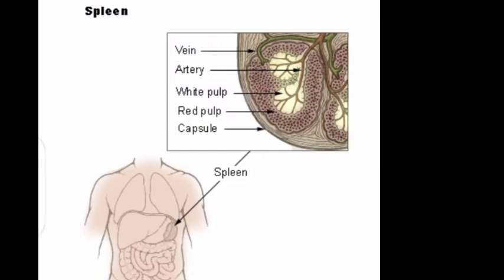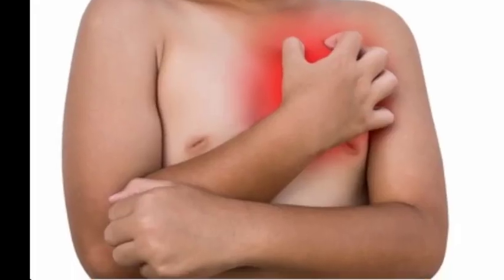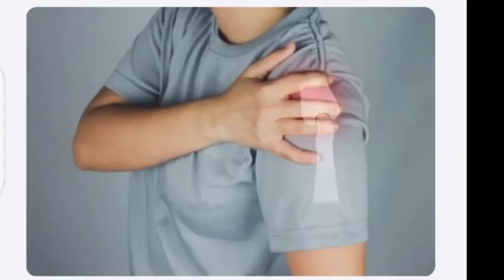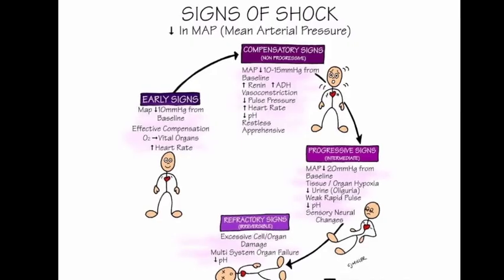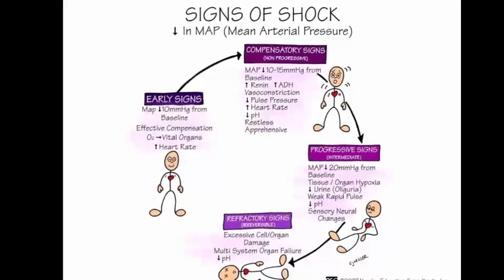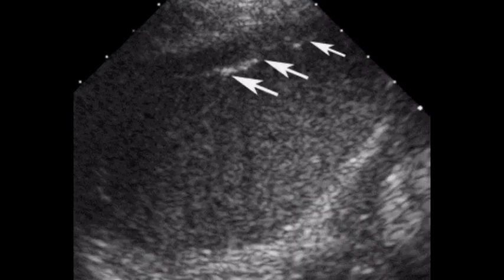Patients may present with left upper quadrant, left chest pain, left shoulder tip pain, and signs of hypotension or shock. Hence, ultrasound evaluation of patients with history of trauma and left hypochondrial pain should be performed urgently in order to detect possible splenic rupture.